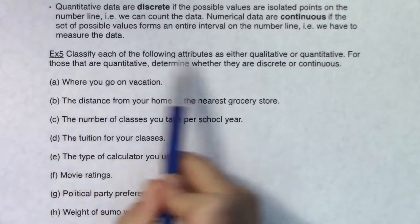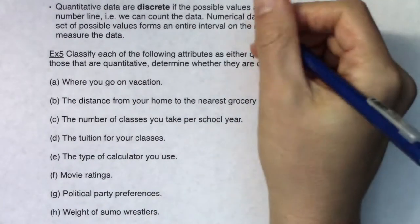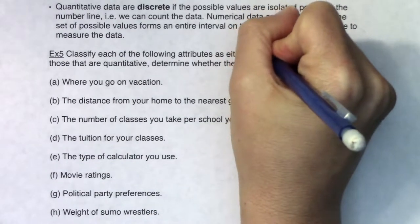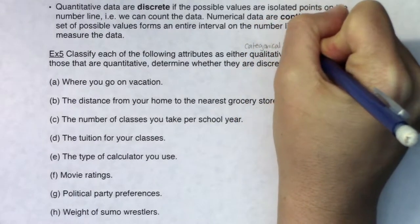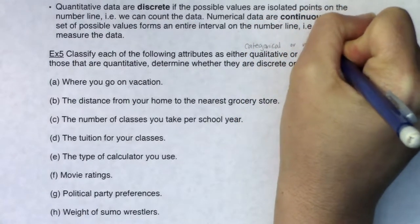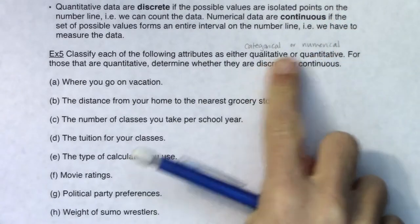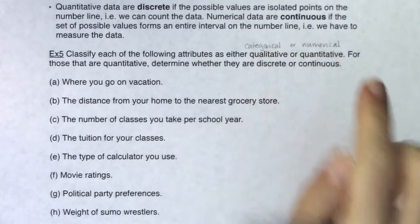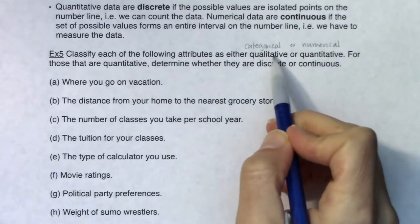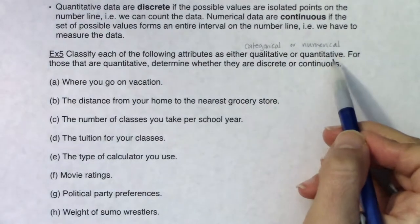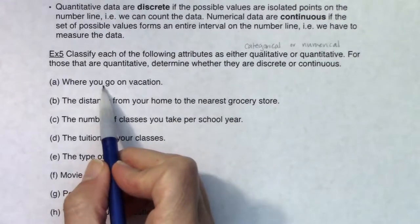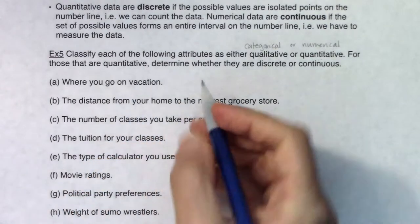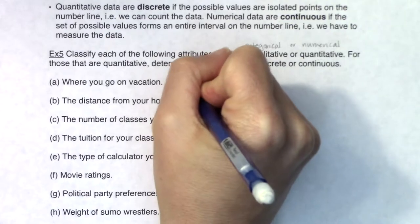I'm going to do A through F with you and then I want you to pause and try and do the rest on your own. Classify each of these as qualitative or quantitative - categorical or numerical. Either vocab term is okay. I usually stick with categorical or numerical. So where I go on vacation, I would answer that with a word, so this is categorical.